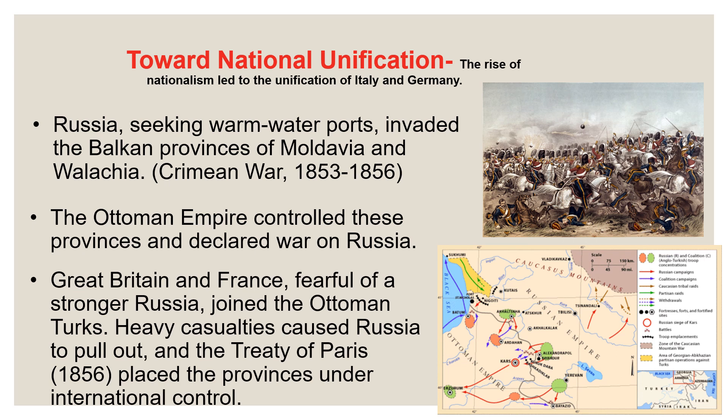Let's first talk about the rise of nationalism leading to these unification movements. There were some areas where nationalism did not really work to create a true strong unified basis. Russia tried to add territories to their nation, seeking warm water ports, by trying to invade the Balkan provinces of Moldavia and Wallachia, which had belonged to the Ottoman Empire. This is part of what is known as the Crimean War between 1853 and 1856. The Ottoman Empire declared war on Russia when Russia started acting aggressively to take these territories — the same territory Russia is acting aggressively to take again in current day.